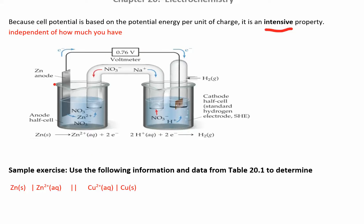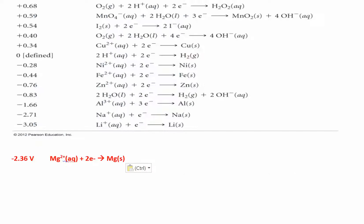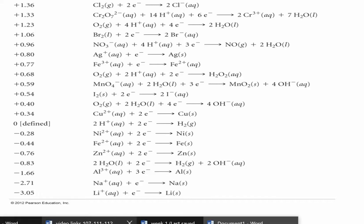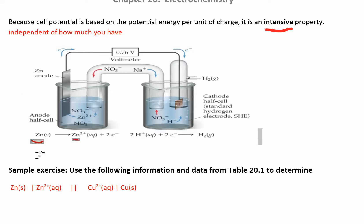Here's an example. We have our anode on one side and our cathode on the other — the cathode here is just the standard hydrogen electrode. If you want to figure out the cell potential, look up the anode species. We have zinc and zinc²⁺, so find that in the table. Zooming in on the table, you can see zinc and zinc²⁺. This is the reduction potential even though the anode is undergoing oxidation — that doesn't matter. Just look up the number: for zinc/zinc²⁺, the reduction potential is −0.76 V.